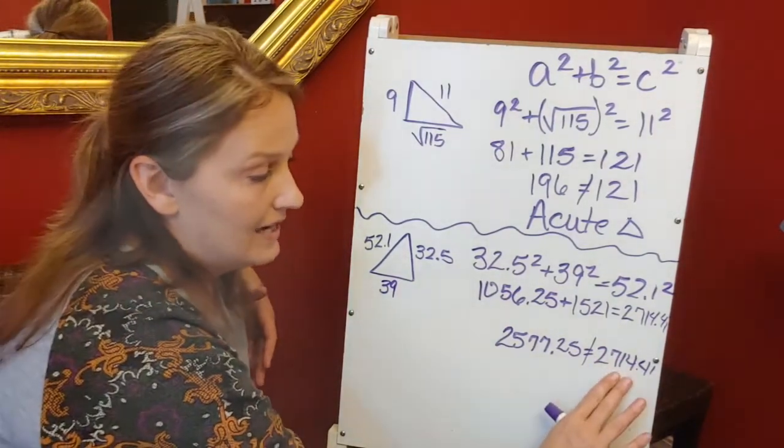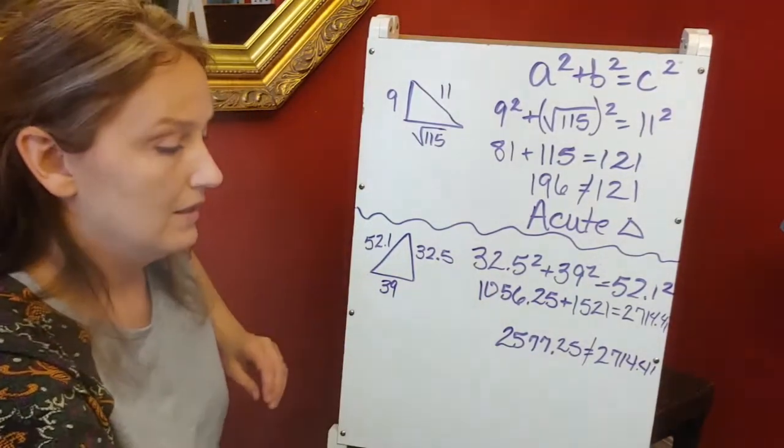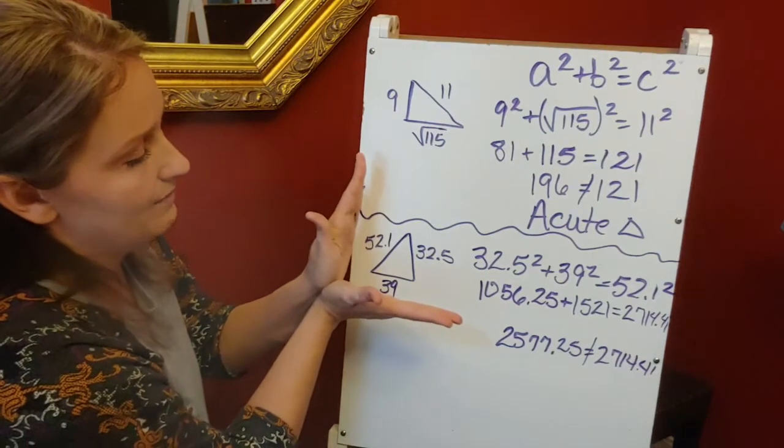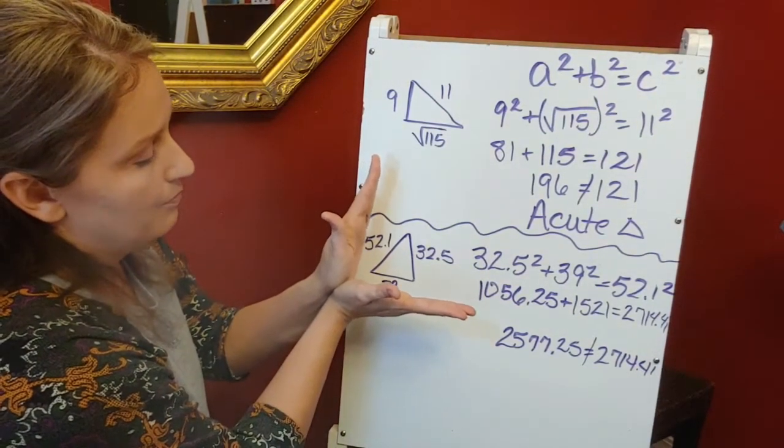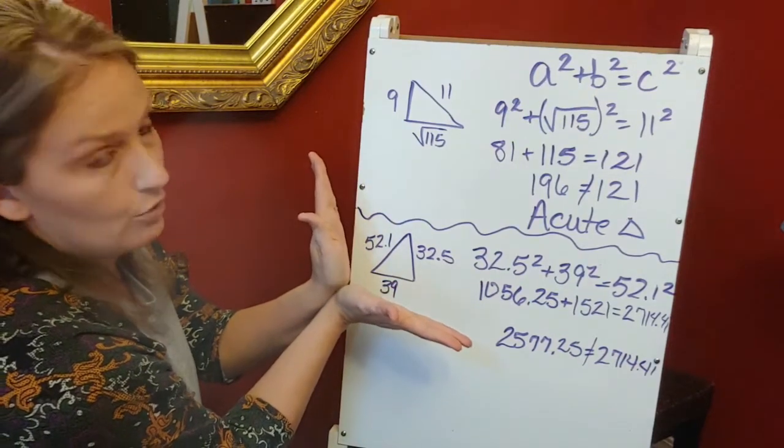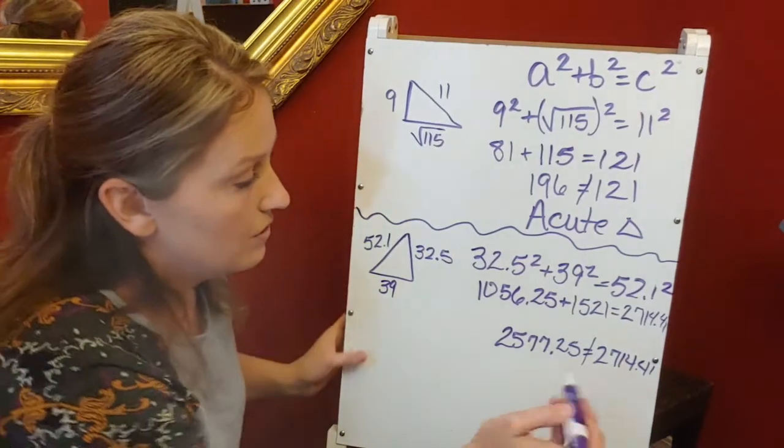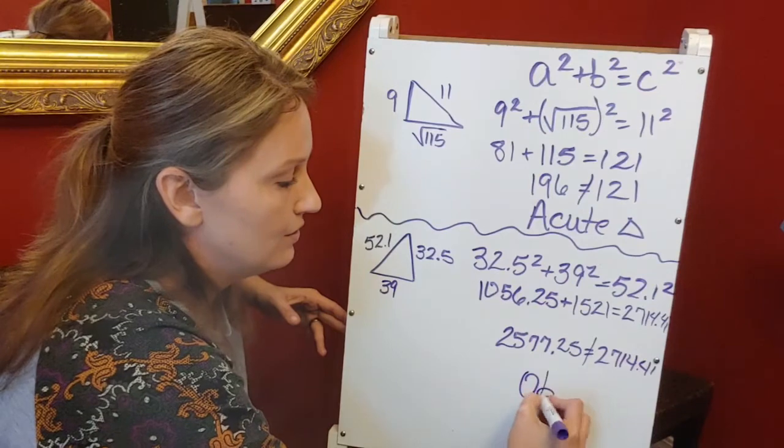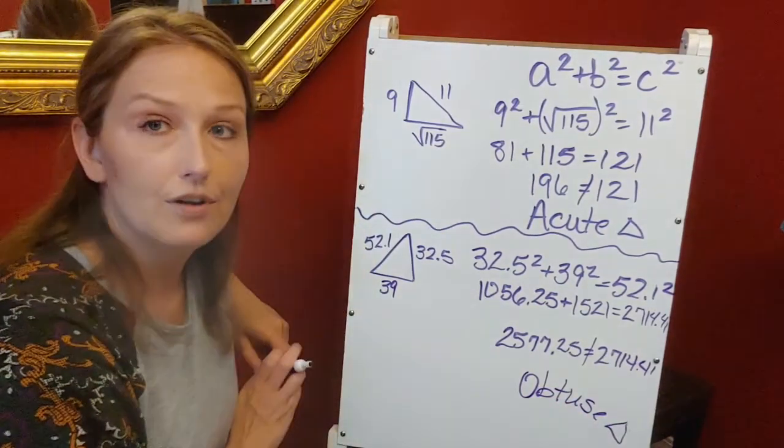Is that equal to 2714.41? Those are not equal, but you can see my right side is greater than my left side. If this right triangle has a certain hypotenuse length and I make it bigger, it's going to open the triangle up where that angle is greater. If the right side is bigger than the left, it's obtuse—an obtuse triangle.